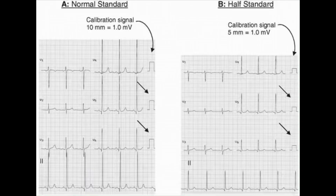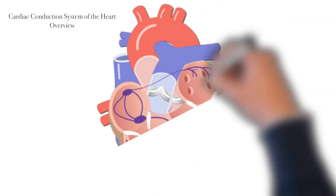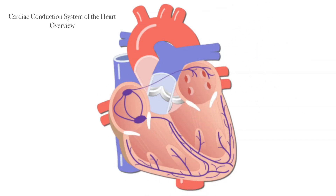Now let's examine the normal ECG components. But before that, you need to know the cardiac conduction system of the heart. The cardiac conduction system is an analogy of the central heating system — the pump, pipes, and radiators — which are of no use unless connected to a power supply. The pump needs electricity to work. The human heart has a similar need and also uses electricity. The heart can create its own electrical impulses and control the route the impulses take via a specialized conduction pathway.